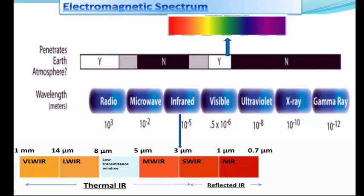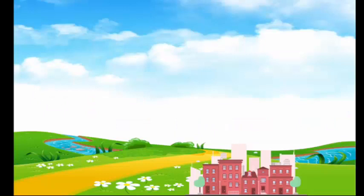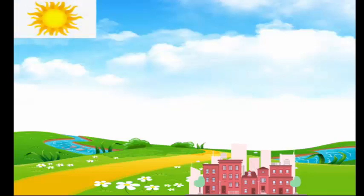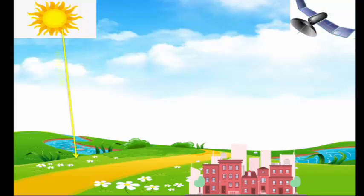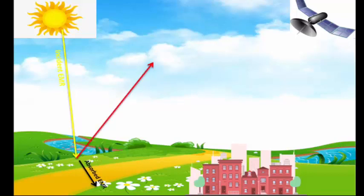Now let us study what happens when electromagnetic radiation falls on the earth — how the interaction of electromagnetic radiation with the atmosphere or our surroundings takes place. Let us consider a city like Mumbai. The sun is our energy source emitting electromagnetic radiation, which falls on the ground and the earth's surface. In the city there are buildings, trees, lakes, and various surfaces. When incident electromagnetic radiation falls on the earth's surface, some amount is absorbed, some is reflected, and some is emitted.